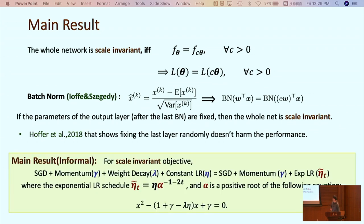Now we are ready to give our main results. SGD with momentum and weight decay and constant learning rate is equivalent to SGD with momentum and with an exponential learning rate, where this exponent is decided together by gamma (momentum), weight decay lambda, and the constant learning rate eta. We implicitly require that the product of eta and lambda is not very large, such that alpha exists. This is always true in practice, because lambda is very small, in the order of 10 to the minus 4.